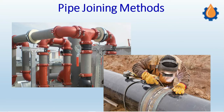This video is dedicated to the different joints used in the industry. When we talk about pipe joining methods broadly, there are two main categories: the permanent joint and the temporary joint. Let us understand the importance and significance of each.